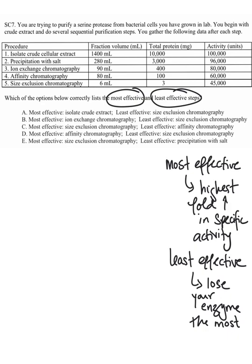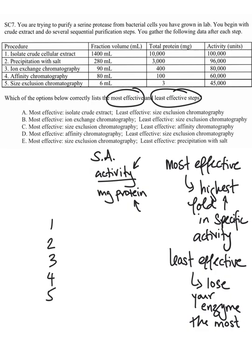To find the most effective step, you compare specific activities after each step. To calculate specific activity, you put activity over the total milligrams of protein. Activity is a measure of how much enzyme you have — the more activity in a sample, the more enzyme is there. Milligrams of protein measures total protein concentration in your sample, some of which will be your enzyme, but most of which in the beginning will not — a lot will just be other proteins from the cell.